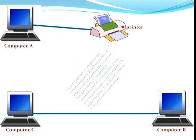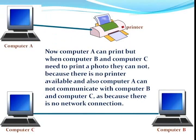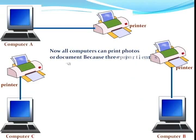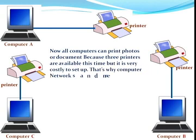Now computer A can print, but when computer B and computer C need to print a photo, they cannot, because there is no printer available. Also, computer A cannot communicate with computer B and computer C, as there is no network connection. Now all computers can print photos or documents, because three printers are available this time, but it is very costly to set up.